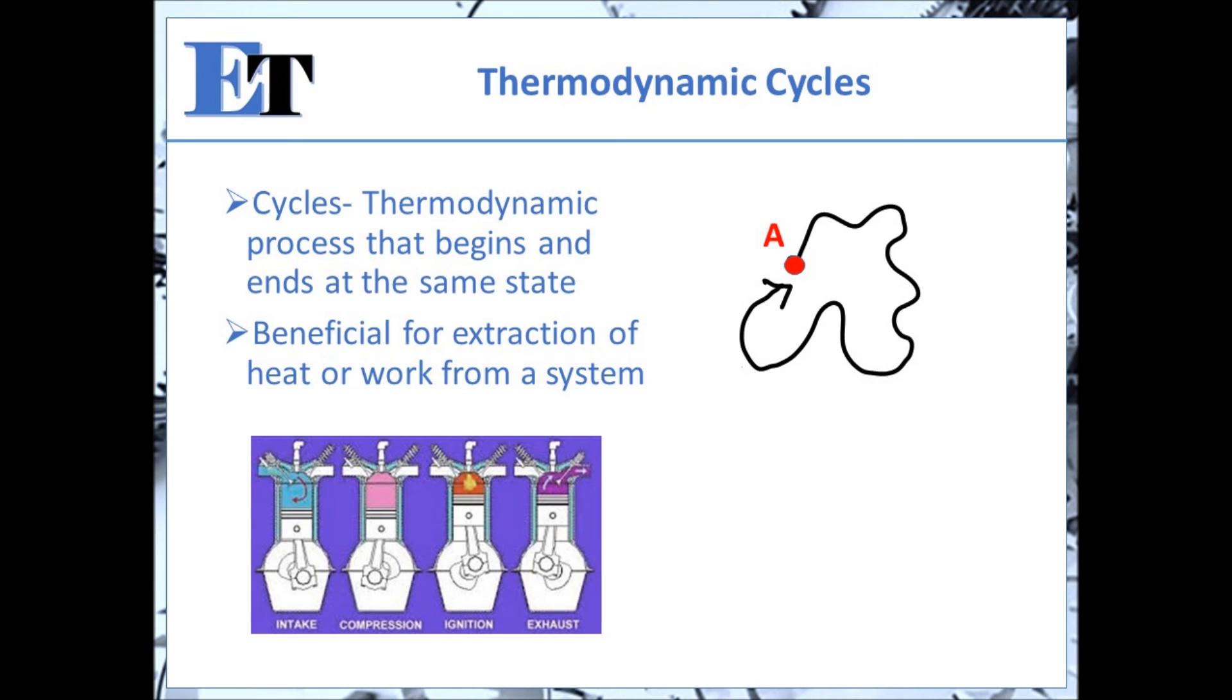A car engine, for example, undergoes numerous thermodynamic cycles to make a shaft spin which produces forward motion. In a four-stroke engine, the cycle consists of four strokes or processes. These processes are intake, compression, ignition, and exhaust. Each process is instrumental in extracting energy from the internal combustion engine.